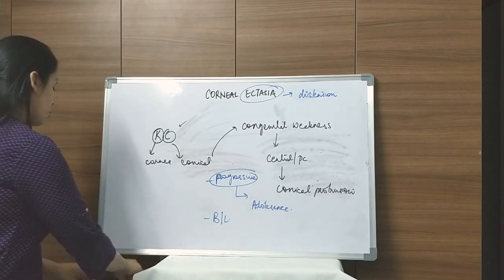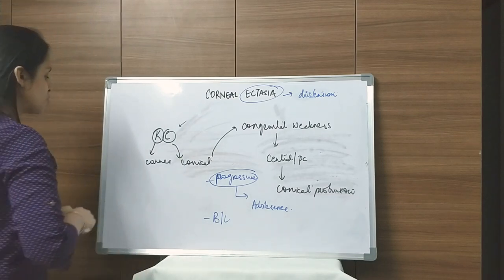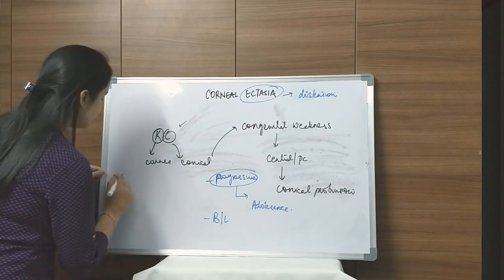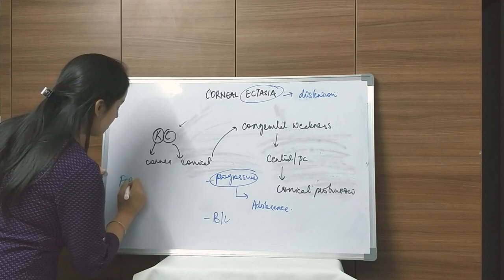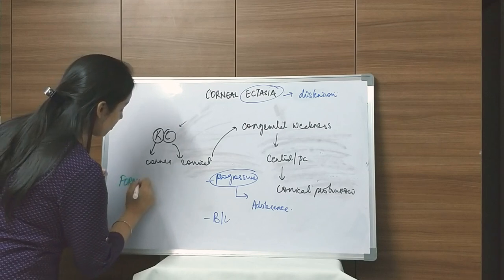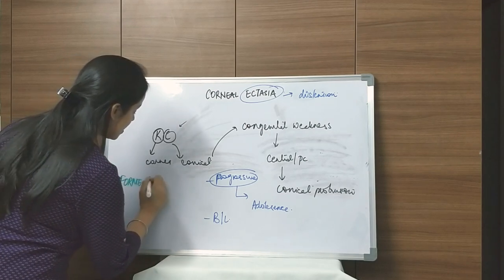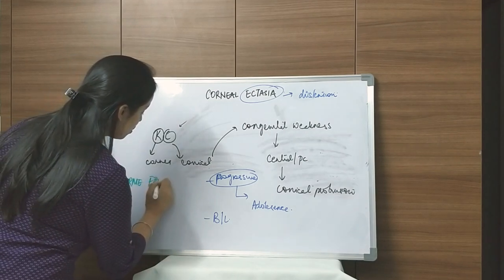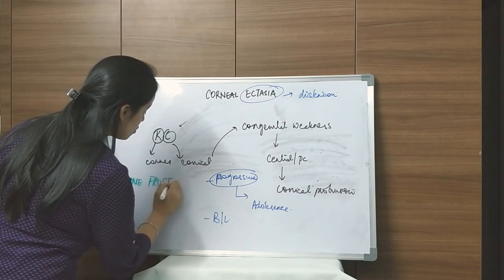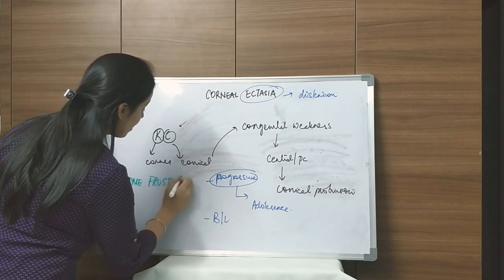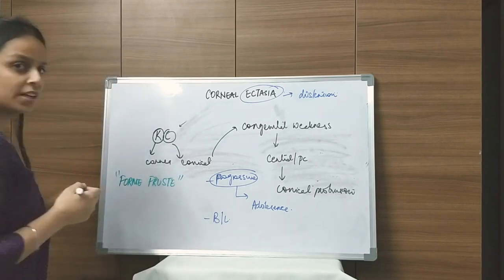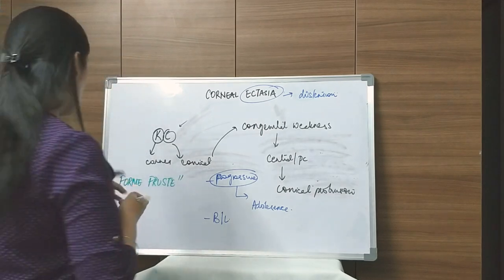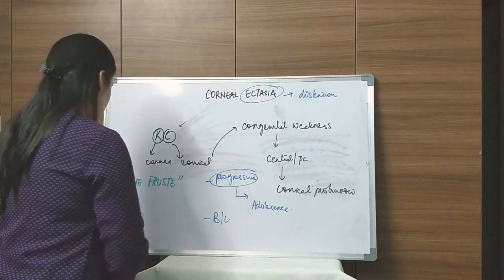This subclinical form of keratoconus is called forme fruste keratoconus. This is the subclinical form of keratoconus, and this is also important for MCQs.